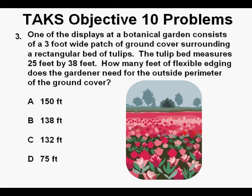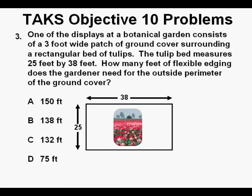Problem 3. One of the displays at a botanical garden consists of a 3 foot wide patch of ground cover surrounding a rectangular bed of tulips. The tulip bed measures 25 feet by 38 feet. How many feet of flexible edging does the gardener need for the outside perimeter of the ground cover? For this problem, I definitely recommend going to the draw a picture strategy. Can you do it without a picture? Of course. But if you don't take the time and care to draw a picture on problems where you can, you are not taking the test seriously and are in danger of failing.